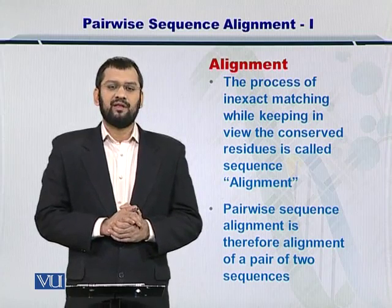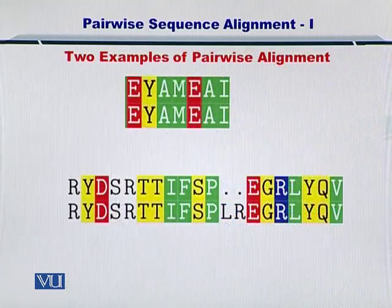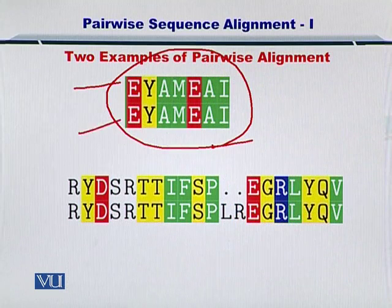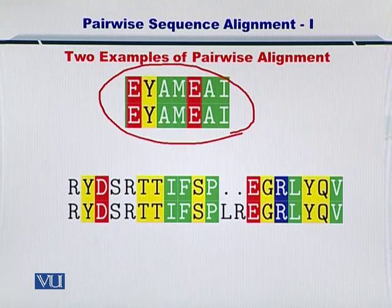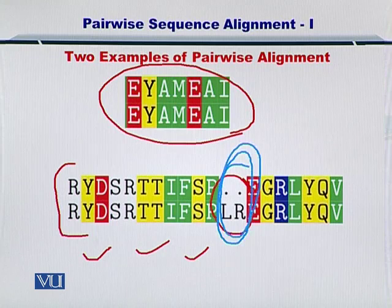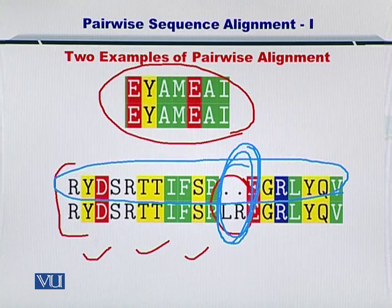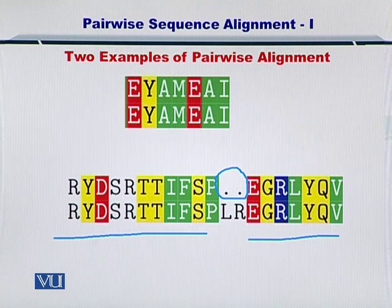Pairwise means you have two sequences which you are trying to compare, so pairwise sequence alignment is sequence alignment between two sequences. Two examples are given here. In the first example, sequence one and sequence two form a pairwise alignment where all amino acids match each other very nicely, showing a lot of similarity. In the example below, everything is matching except one portion, because two amino acids could not be found in the upper sequence, so they are represented with two dots. The rest of the sequence matches very nicely. These dots are called gaps, and we'll talk about them in detail later.